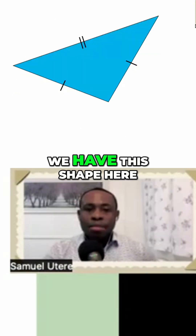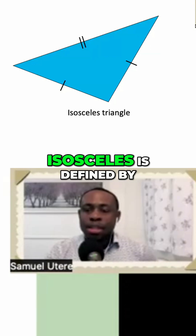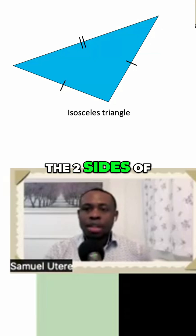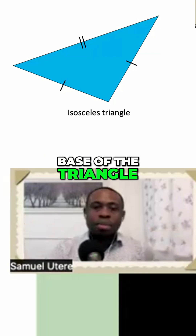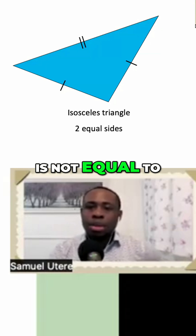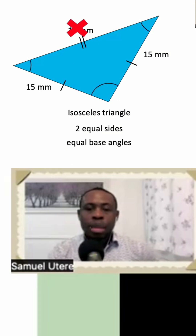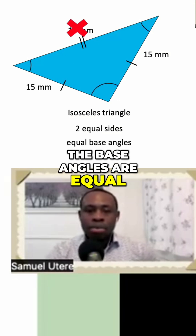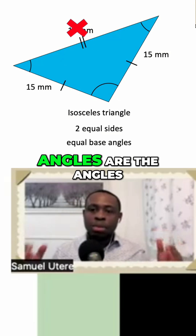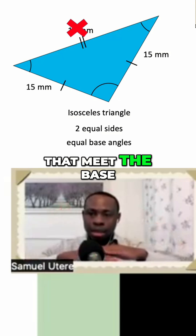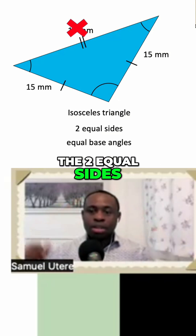Next, we have this shape here. This is an isosceles triangle. Isosceles is defined by the two sides of the triangle being equal. Those two equal sides meet the base of the triangle. The other third side is not equal to any of the other sides. The base angles are equal — so they must have equal base angles. The base angles are the angles that meet the base of the triangle; it is the angle that is formed by the two equal sides of the triangle.